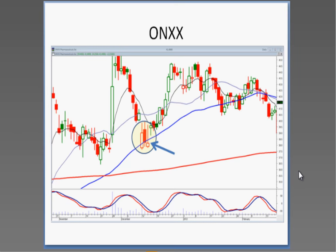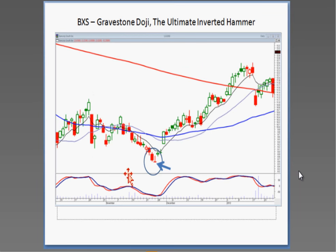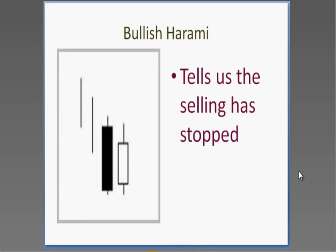The 8-exponential moving average is what we use for the T-line. Whether you want to use simple or exponential is up to each person — we've been very successful using the 8-exponential moving average. Your ultimate inverted hammer is the gravestone doji: if it gaps up the next day, the probabilities are extremely strong you're going to be in an uptrend. The bullish harami is the inside day — it just tells you the selling has stopped and you're looking for bullish confirmation.